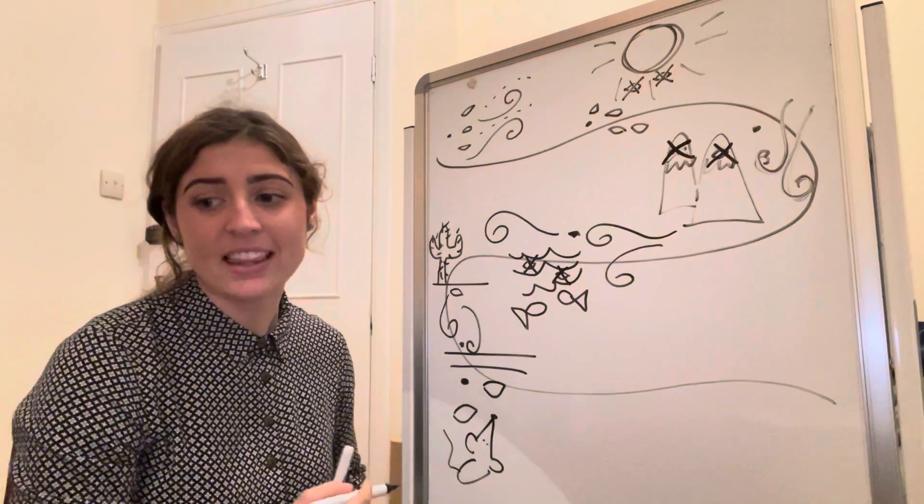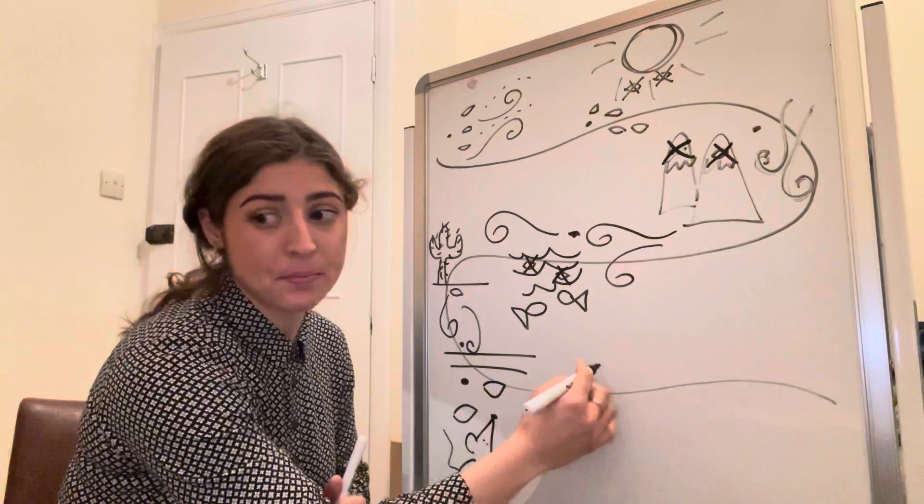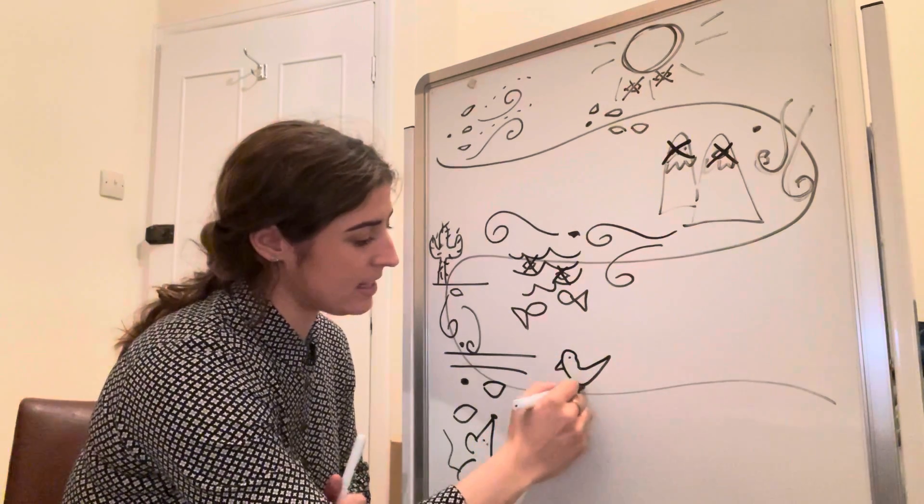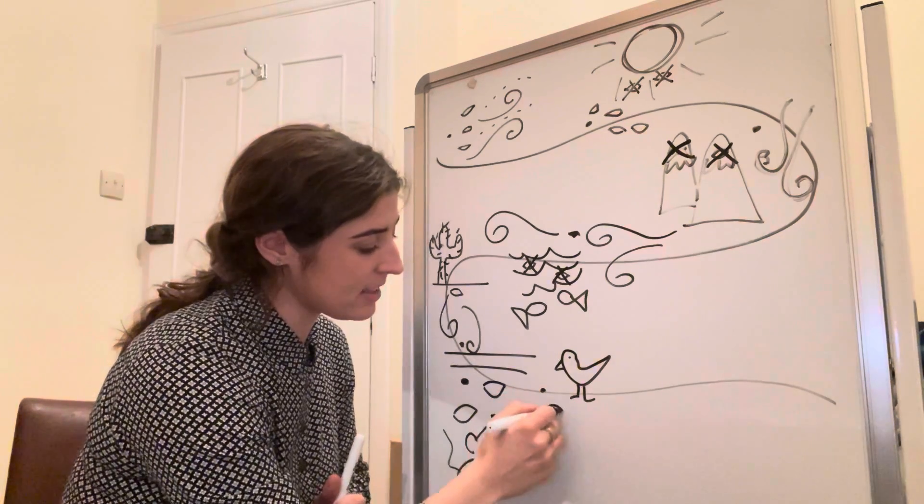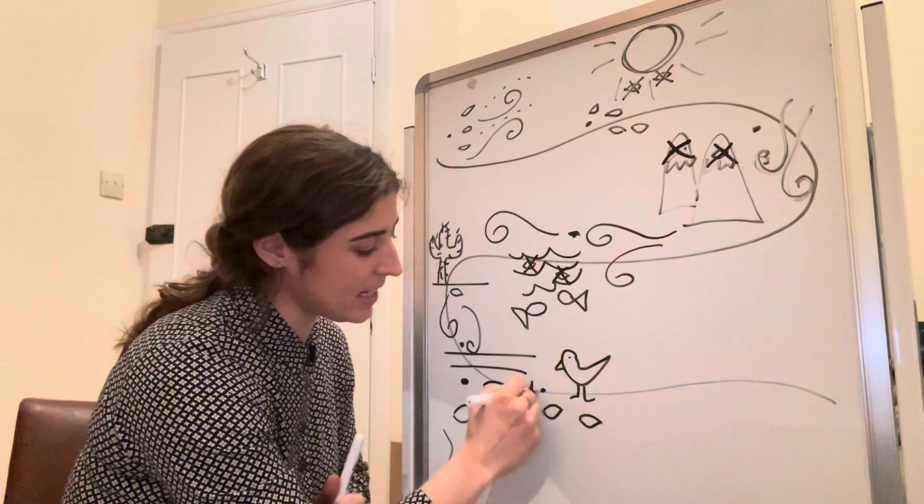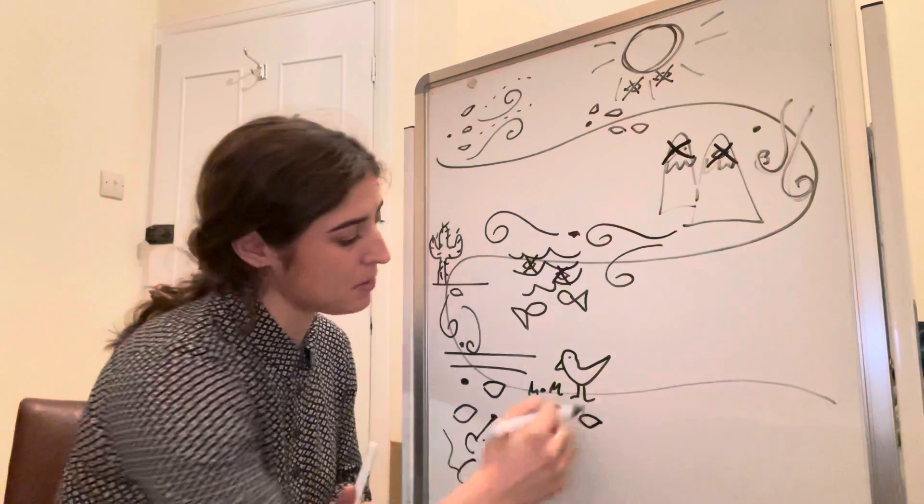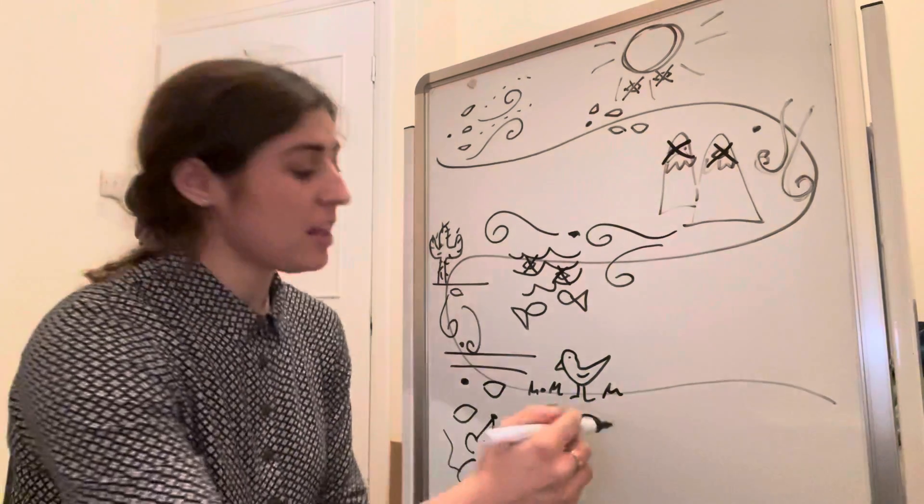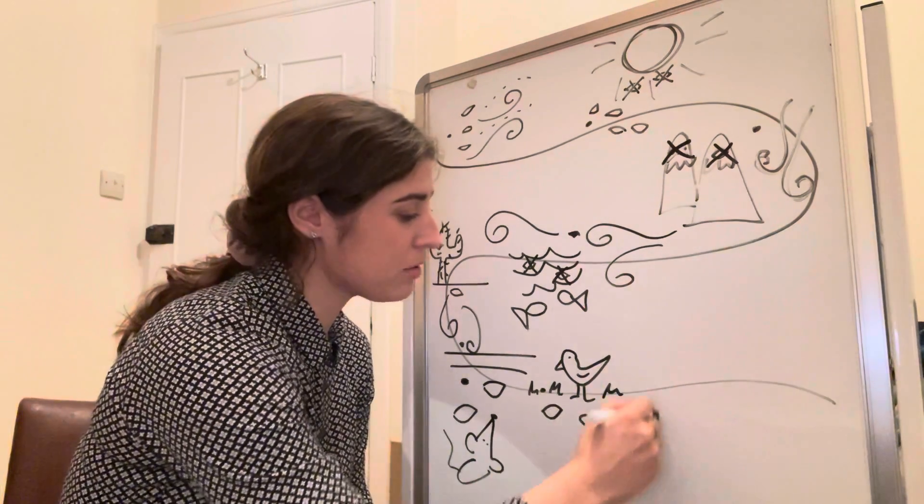And then the next part of the story is a bird comes along and tries to get the seeds, but it didn't notice the little seed because it was hiding in the grass, in the soil. It was too small for the bird to see.